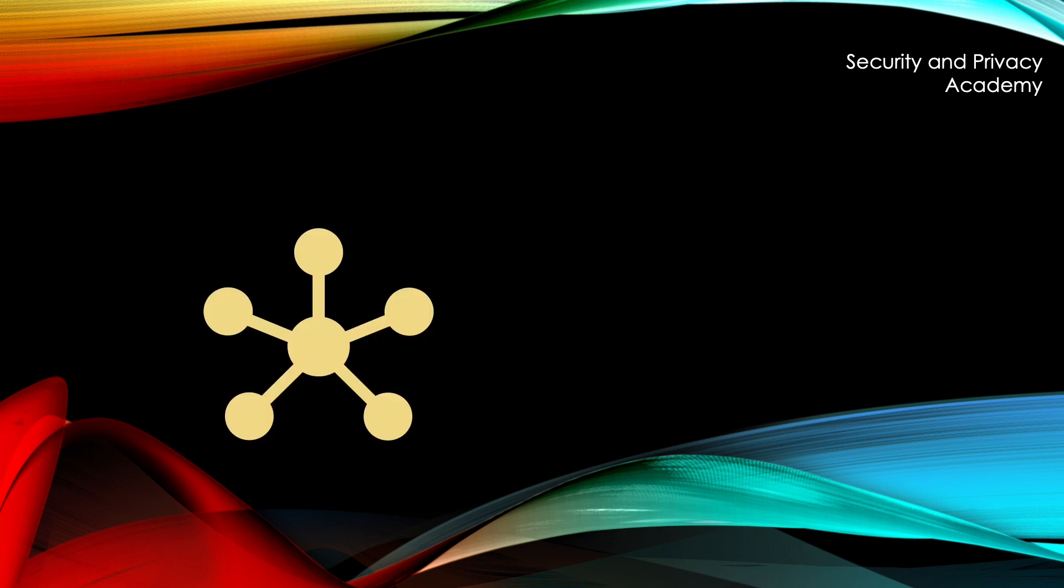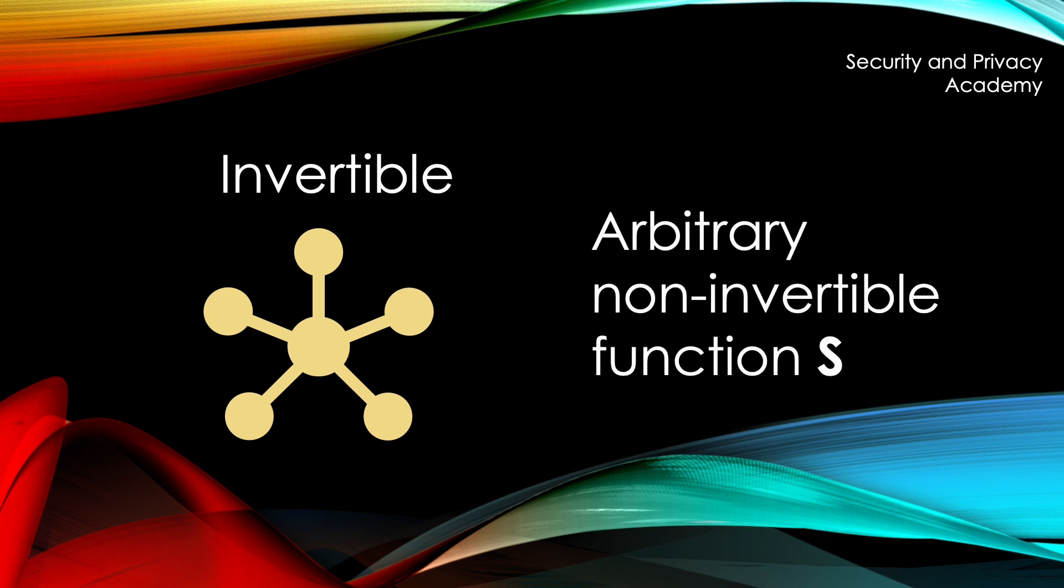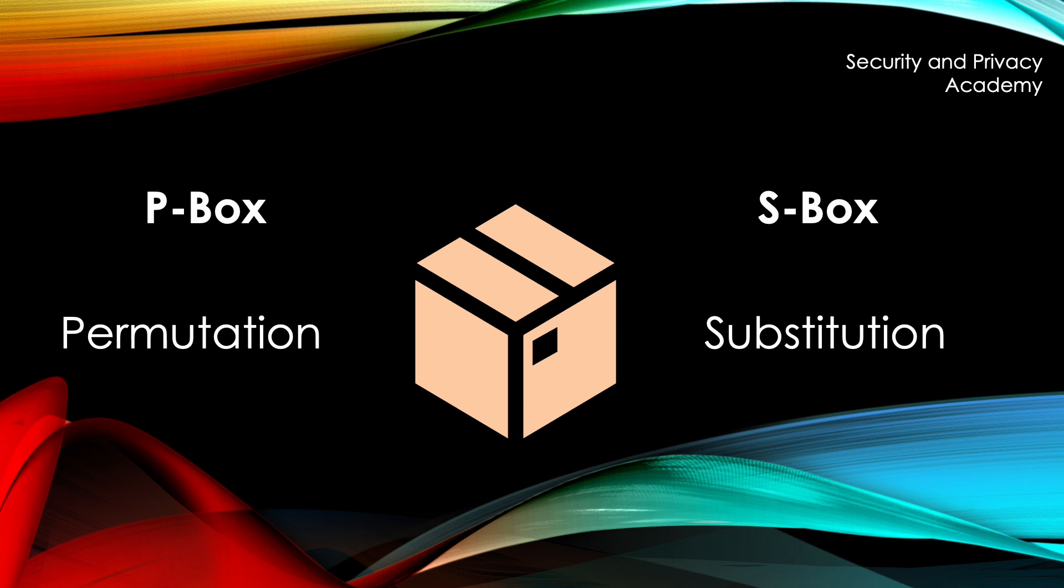The beauty of the Feistel network is that it stays invertible even if you use an arbitrary non-invertible function S. The function S, if you remember from the previous video on symmetric encryption, denotes the S-box of the encryption process, which means it substitutes bits with other bits.